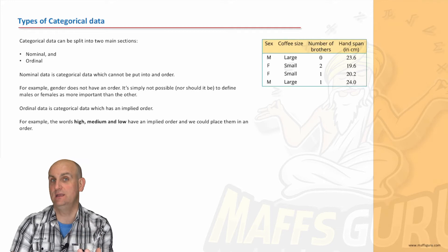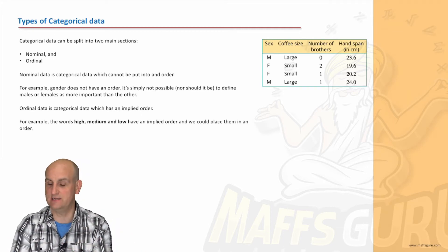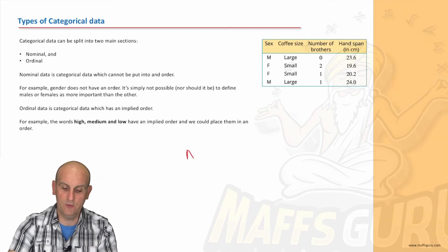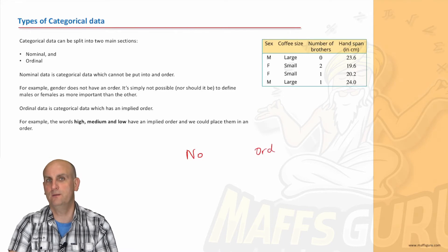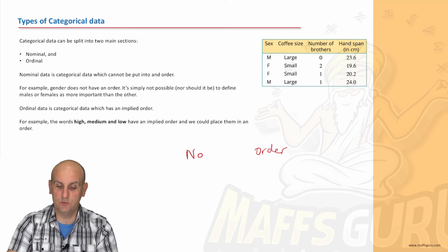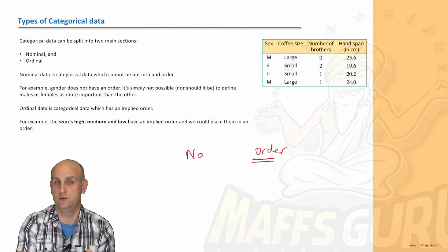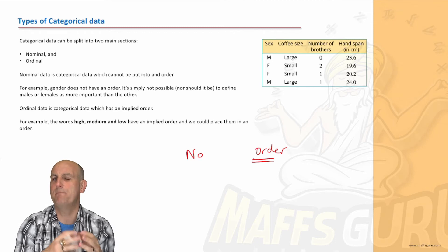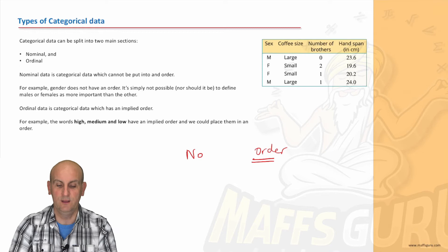Now, to make things even more interesting, we can narrow down categorical data to have subcategories. And they are nominal, which begins with N-O, and ordinal, which begins with ORD. Hold on a moment. ORD sounds like order, or it begins with the same things as order. Now, in that sense, there are certain words that we can use that almost imply that there is an order, that we can put them in some sort of order.